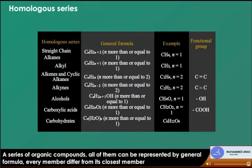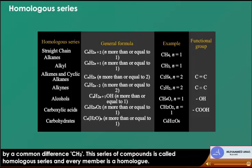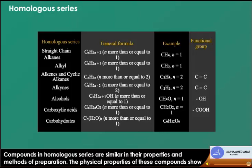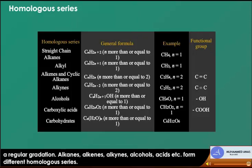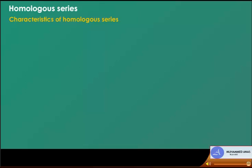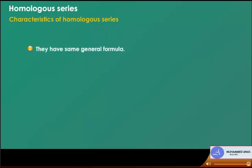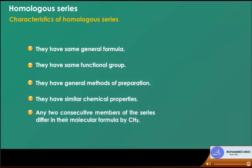Homologous series: a series of organic compounds all represented by a general formula, where every member differs from its closest member by a common difference of CH2. This series is called a homologous series, and every member is a homologue. Compounds in a homologous series are similar in properties and methods of preparation. Alkanes, alkenes, alkynes, alcohols, acids, etc. form different homologous series. Characteristics: same general formula, same functional group, similar methods of preparation, similar chemical properties, and consecutive members differ by CH2 in molecular formula.